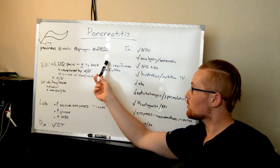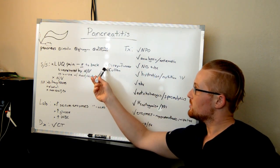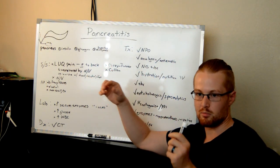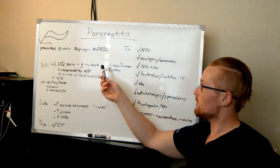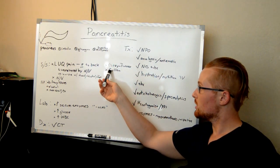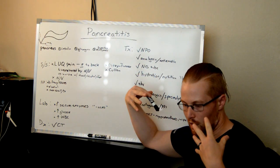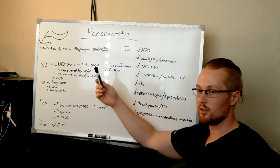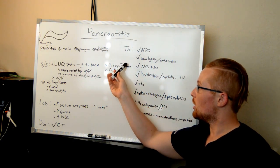Two other signs and symptoms you may see are Grey Turner's and Cullen signs. With pancreatitis, it's digesting itself and releasing all kinds of inflammatory mediators, and enzymes might be leaking out, causing bleeding around that section of the abdomen. If there's bruising around the umbilicus, it's called Cullen sign. If you see bruising around the flanks, it's called Grey Turner sign. The way you can know the difference is Grey Turner, you have to turn the patient over to see their back, and you'll see bruising there.